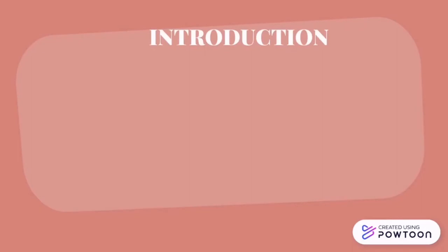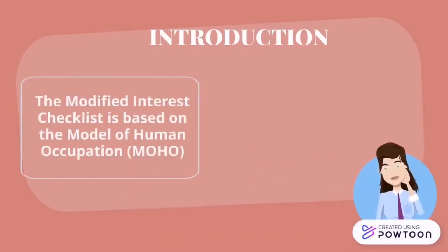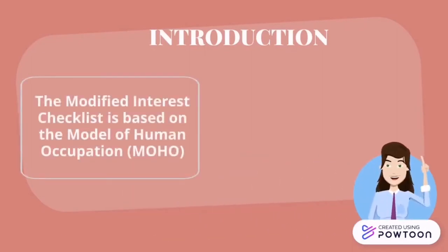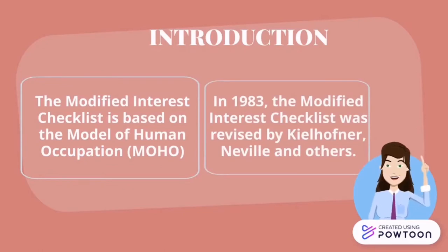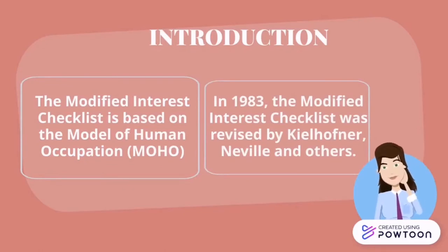The Modified Interest Checklist is based on the Model of Human Occupation (MOHO). In 1983, the Modified Interest Checklist was revised by Kielhofner, Neville and others.